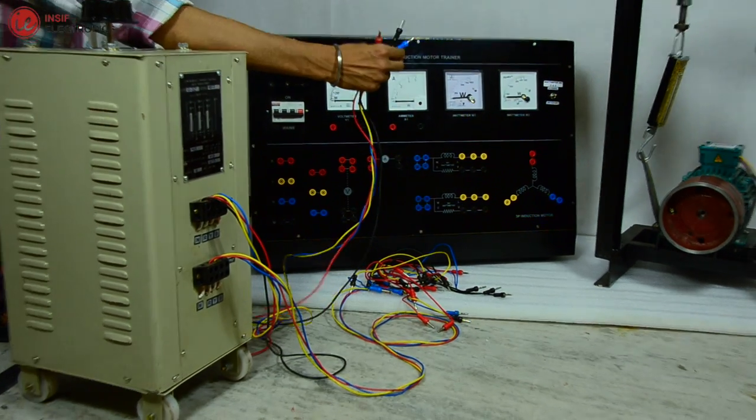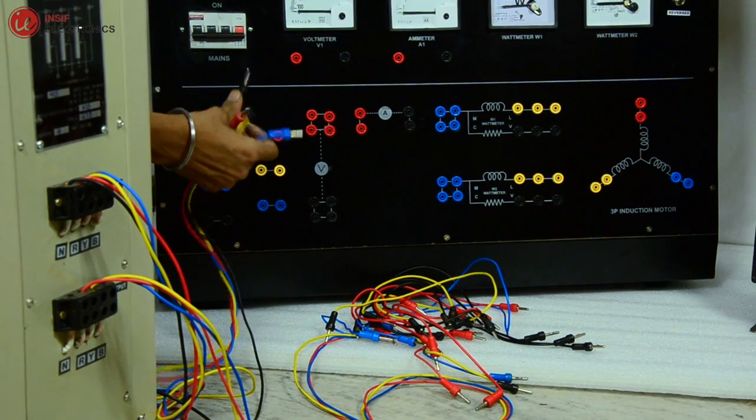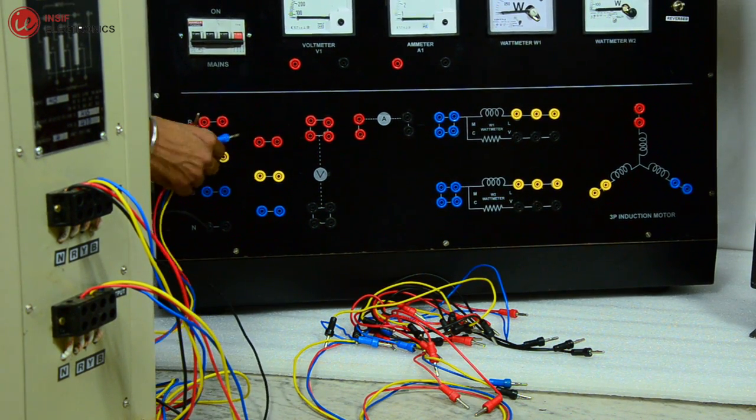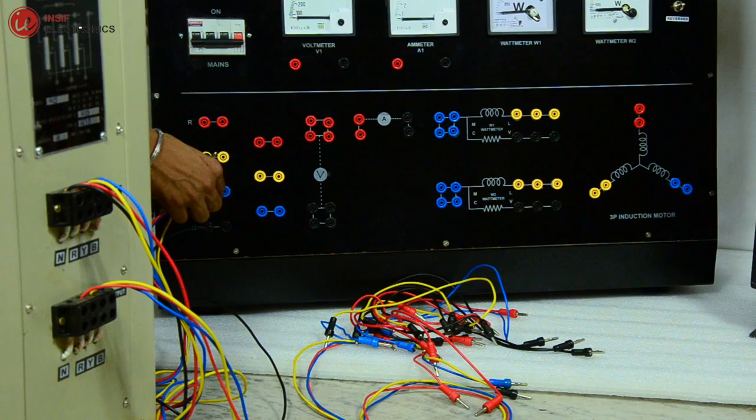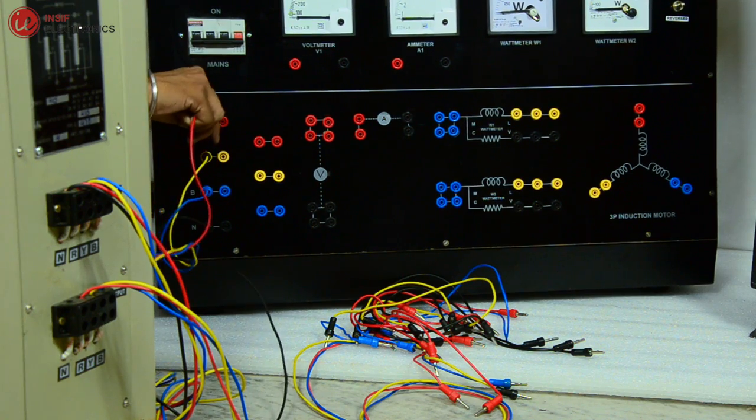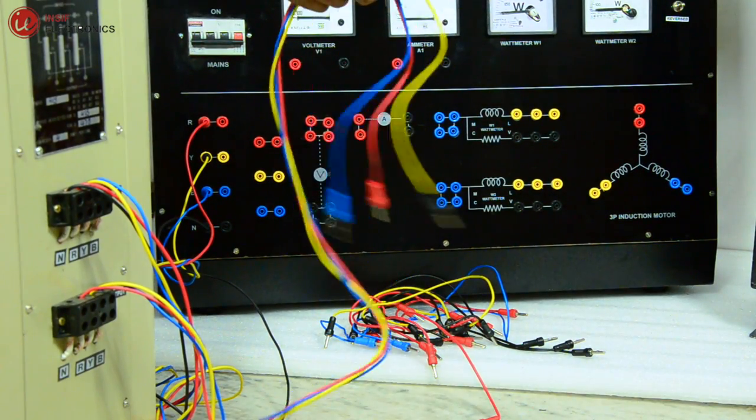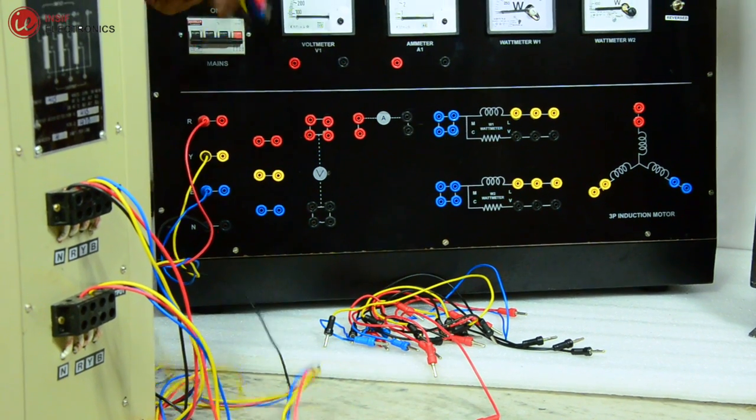Now let's start the connections. Connect the input of three-phase variac to the panel and connect the output of variac to the panel as shown.